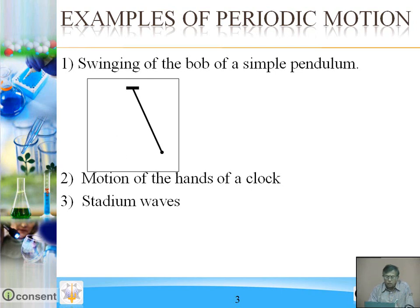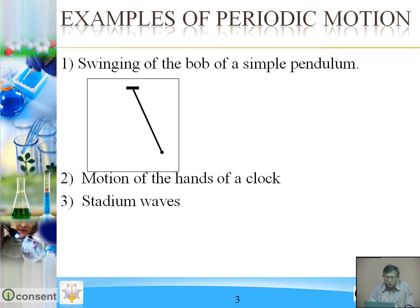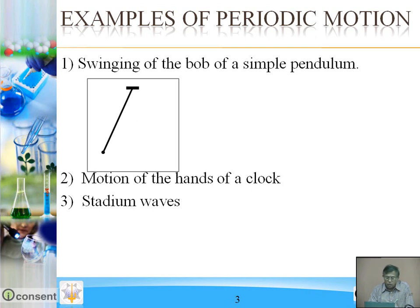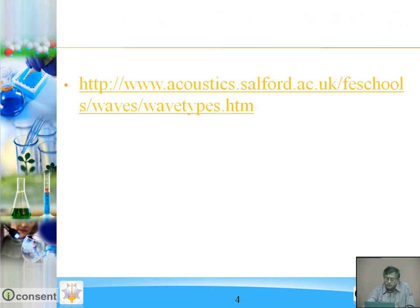These are the examples of periodic motion: swinging of the bob of a simple pendulum, motion of the hands of a clock, and stadium waves.